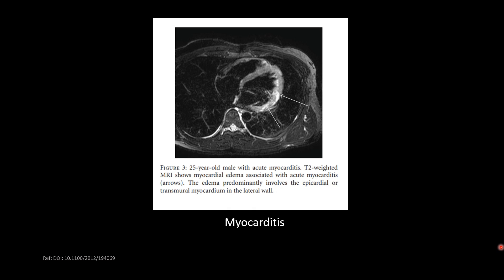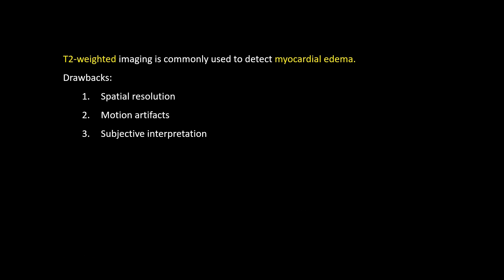Here is a case of myocarditis — you can see significant edema in the lateral wall of the left ventricle. However, conventional T2 images have certain drawbacks: spatial resolution is not that good, they are very prone to motion artifacts, and interpretation is subjective because the data is not quantified. To quantify the T2 data, we do T2 mapping, which we will talk about next.